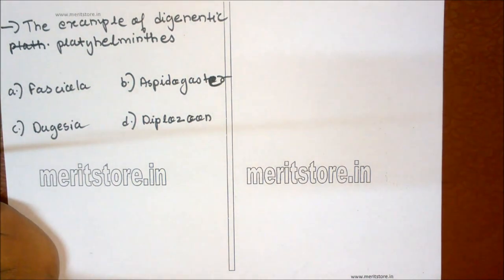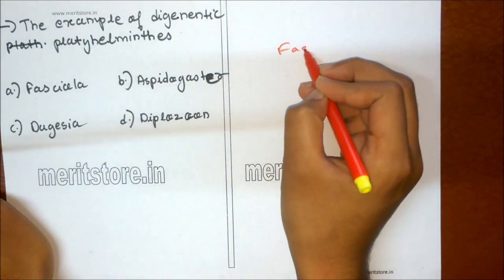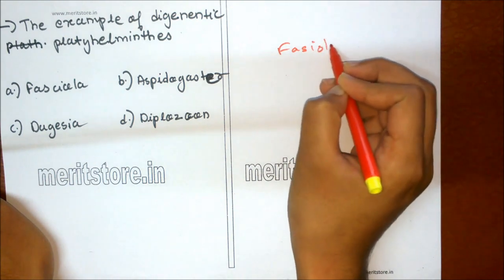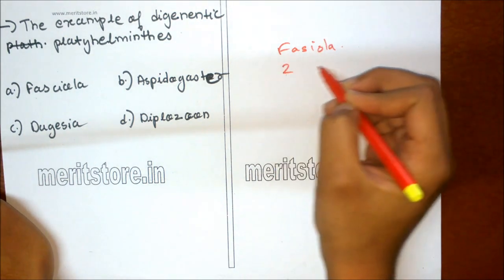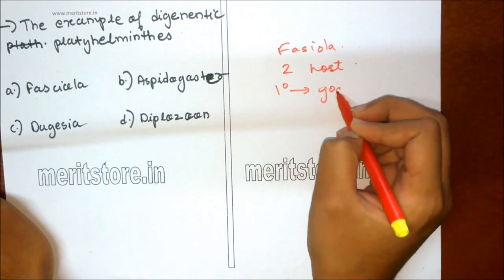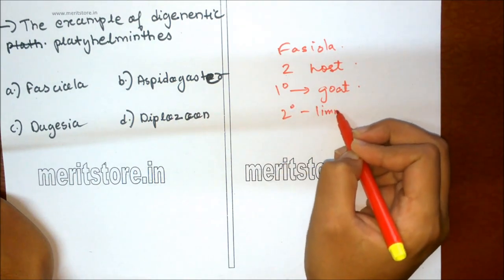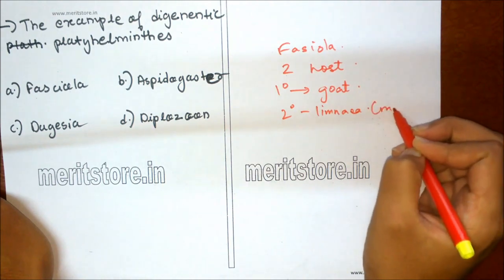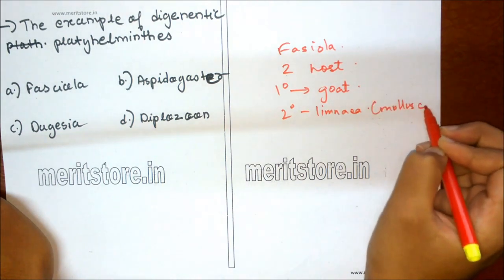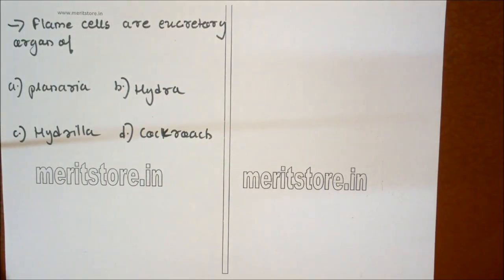The example of digenetic Platyhelminthes is: A Fasciola, B Aspidogaster, C Dugesia, D Diplozoa. The Fasciola life cycle is digenetic — they pass their life in two different hosts. The primary host is goat, while the secondary host is Limnaea, which is a mollusc. Option A is the correct answer.